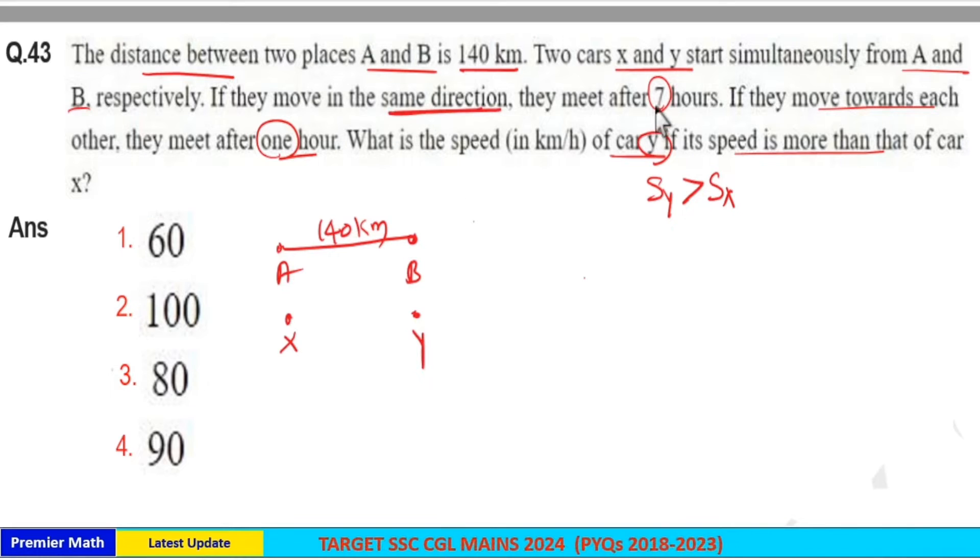If they move in the same direction, they meet after 7 hours. But one direction is not possible because car X's speed is less than car Y's speed, and there is distance between them. So car X cannot meet car Y. They should move in the other direction where car Y can catch up to car X after 7 hours. This is correct.